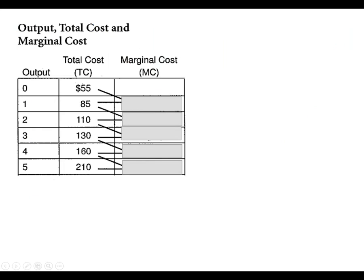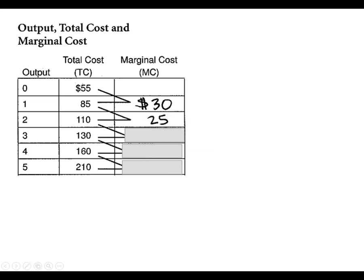Here's what the marginal cost curve might look like. Let's calculate the marginal cost. This is the total cost and this is output. From 55 to 85, you subtract to get 30. The next one, 110 from 85, it's going to be $25 additional, and so forth.